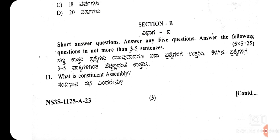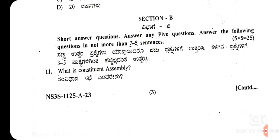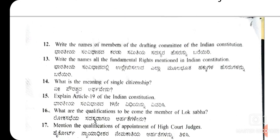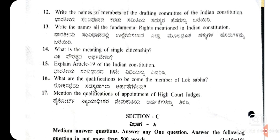Section B consists of short answer questions. You need to answer any 5 questions, answering each in not more than 3 to 5 sentences. The 11th question is: what is the Constituent Assembly? There are 7 questions given in Section B and you need to answer any 5.